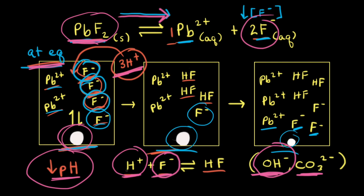Therefore, the solubility of a compound containing a hydroxide ion would increase as H⁺ ions are added to the solution. It's also important to note that for this lead(II) fluoride problem, if the pH is decreased at a constant temperature, the Ksp value for PbF₂ remains constant. So the molar solubility does increase, but the Ksp value remains the same.